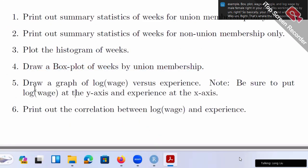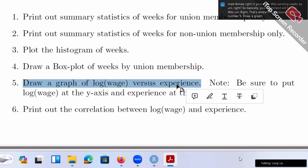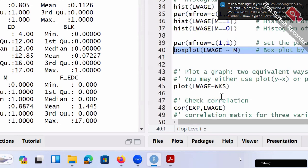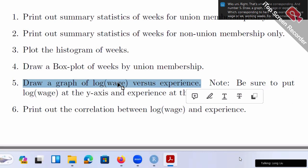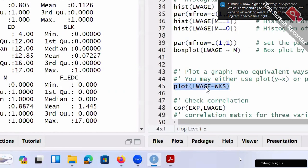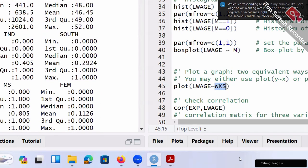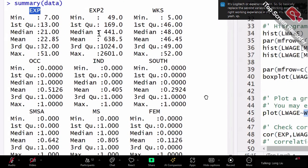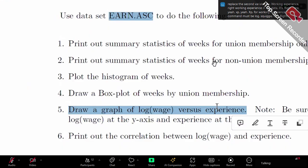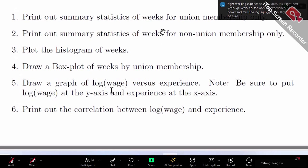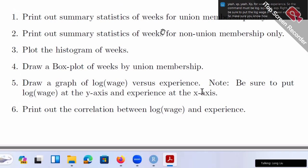And number five, draw a graph log wage over experience, which corresponded to here. In my example, it's log wage over WKS, working weeks. For the homework, it's log wage over experience. So basically replace the second variable by working experience. Working experience in my data, it's right here, exp. Exp is for working experience. So the command must be log wage squiggle exp. So note, be sure to put the log wage as a Y experience X. So make sure Y squiggle X, locations.